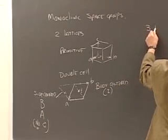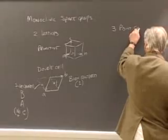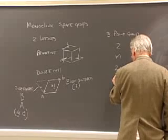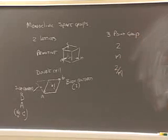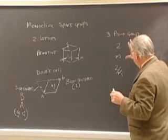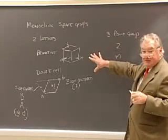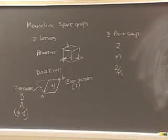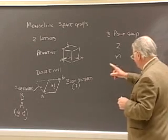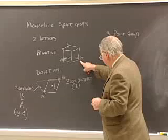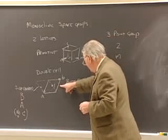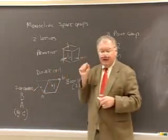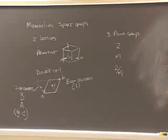And then there are three point groups. And they were 2, m, and then a combination of a twofold axis perpendicular to a mirror plane. So it looks as though, in principle, there are going to be six combinations. Point of fact, there are a lot more because of the surprise that we have in store for us. And then there are a lot more because of the lattice type, which lattice type would you pick as the standard one? And here, there's a major decision that has to be made.